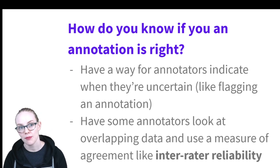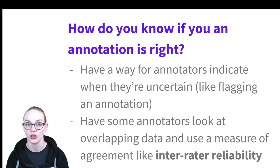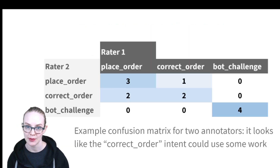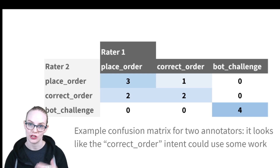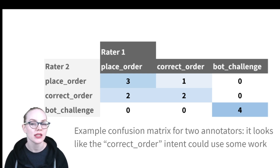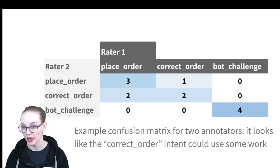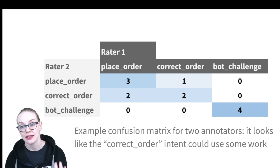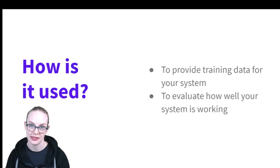It's also helpful to have some annotators look at the same data and then compare their annotations — a measure of agreement. A lot of people talk about inter-rater reliability; you could use Cohen's Kappa or Fleiss's Kappa for this, or you could just put it in a table. Here, rater one's annotations are in the columns and rater two's are in the rows. They agree on everything labeled 'bot challenge,' and mostly on 'place order,' but for 'correct order' there seems to be confusion about where that label should be applied — which might be evidence it needs clarification, should be split, or possibly removed.